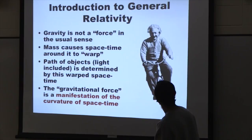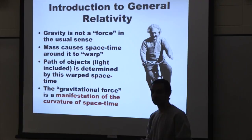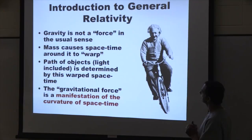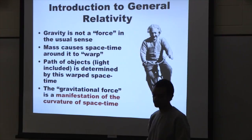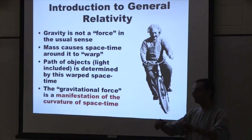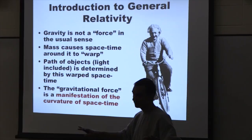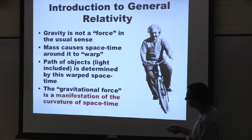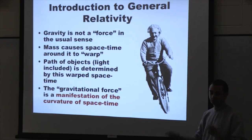General relativity is Einstein's theory of gravity, published in 1915 — more than 100 years ago. In this theory, Einstein says gravity is not a force in the usual sense. When you have significant mass, it basically warps the space-time around it, and nearby masses are affected by this warped space-time. Gravitational force is really a manifestation of this curvature — this warping of space-time — and has nothing to do with a push or pull of one mass upon another.